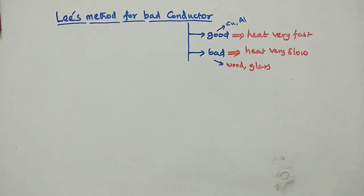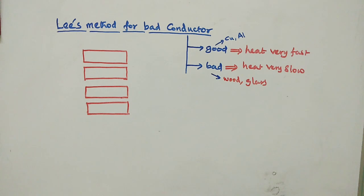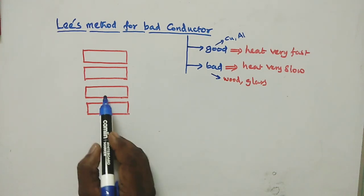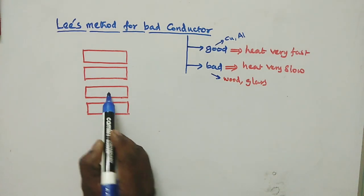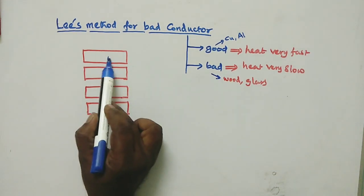Glass is an example of a bad conductor. To measure the thermal conductivity of bad conductors, we use this experimental setup. The setup consists of four metal discs: Disc 1, Disc 2, Disc 3, and Disc 4.